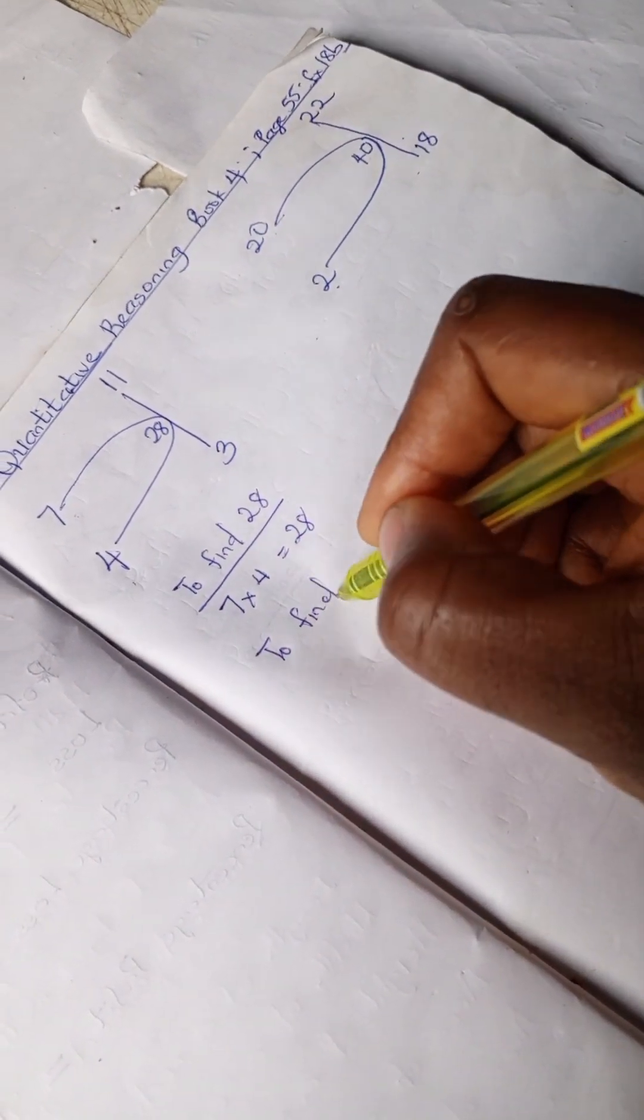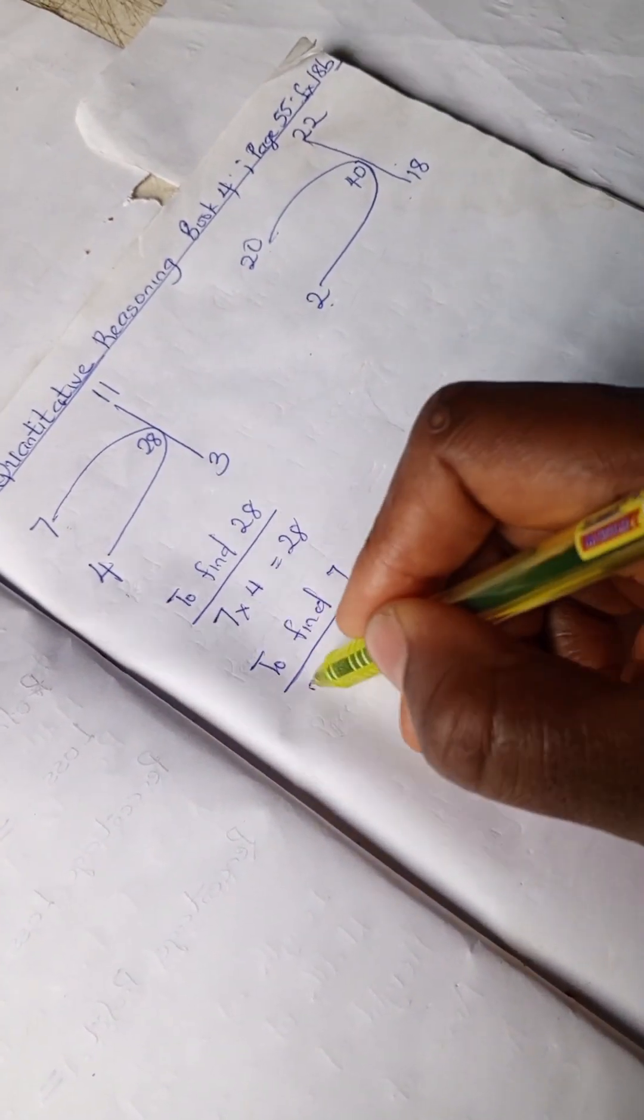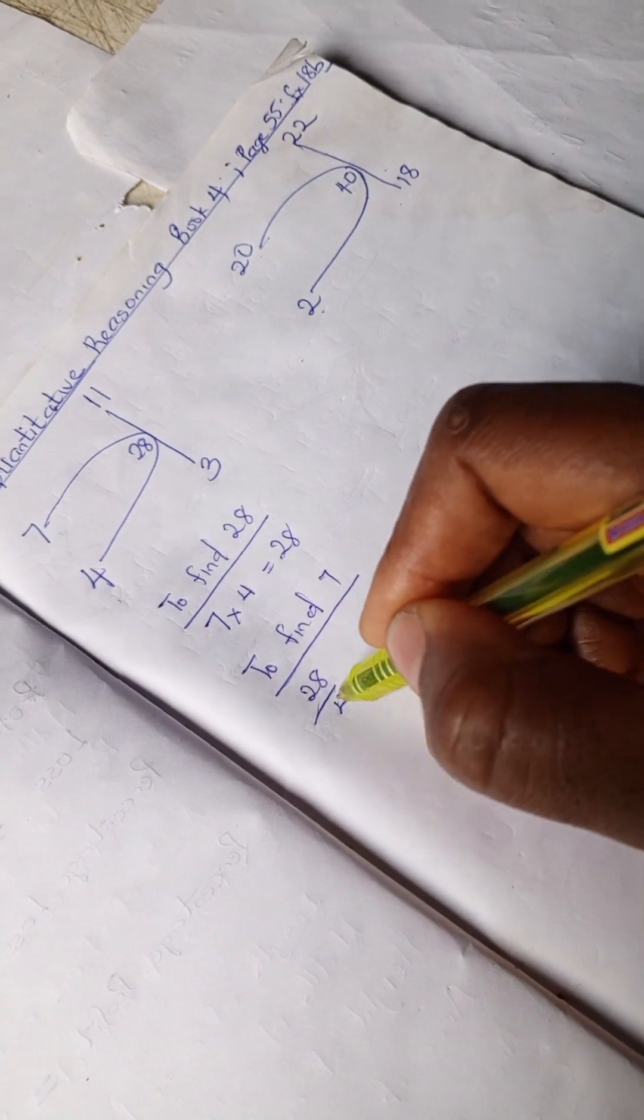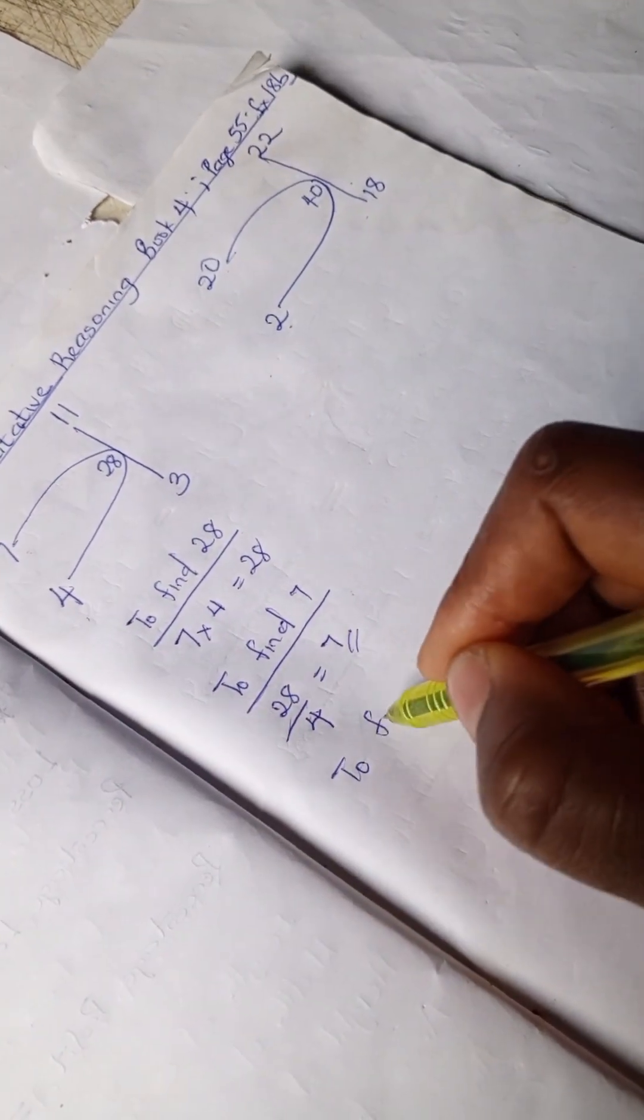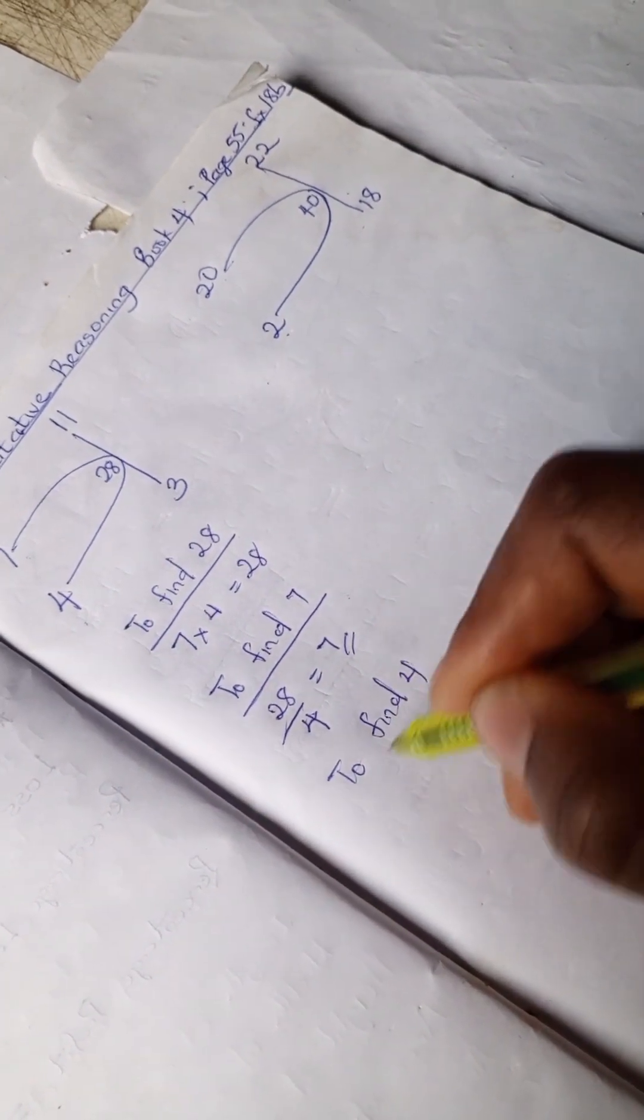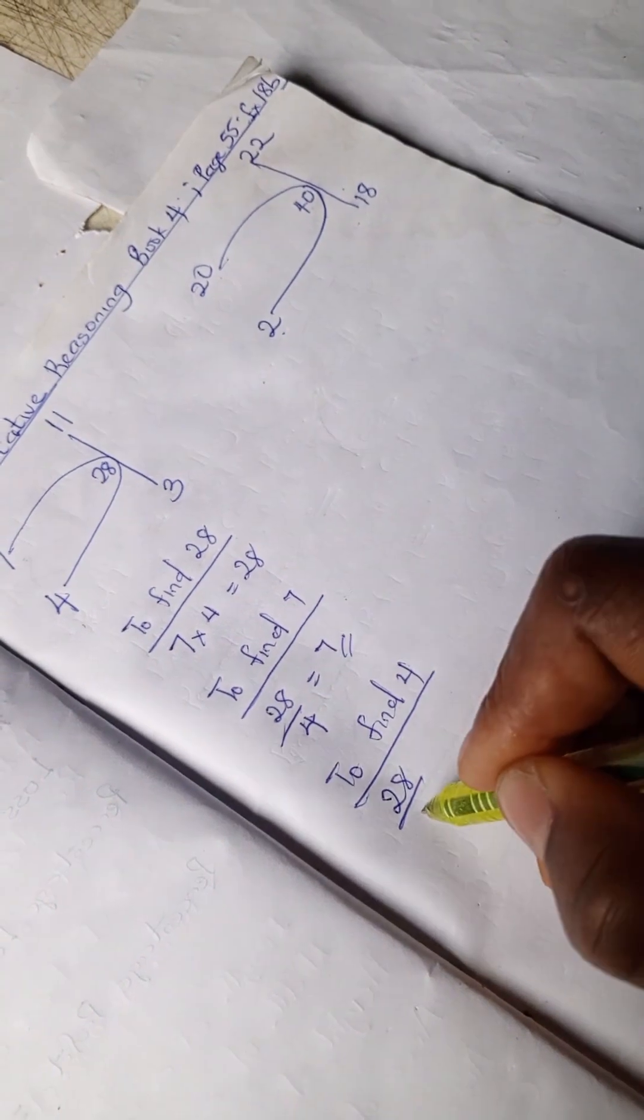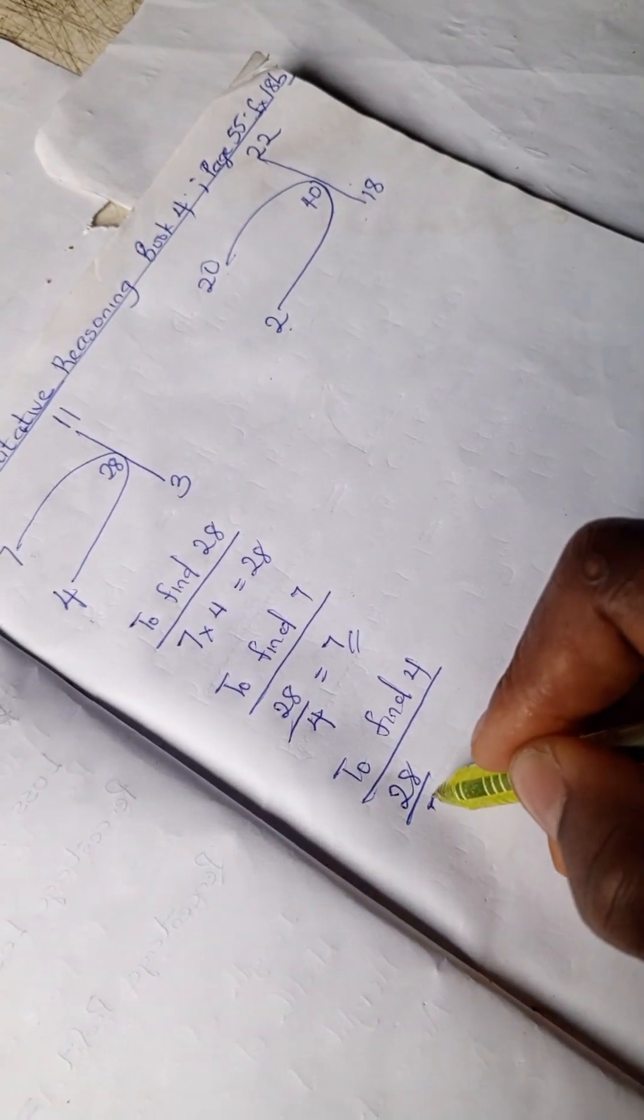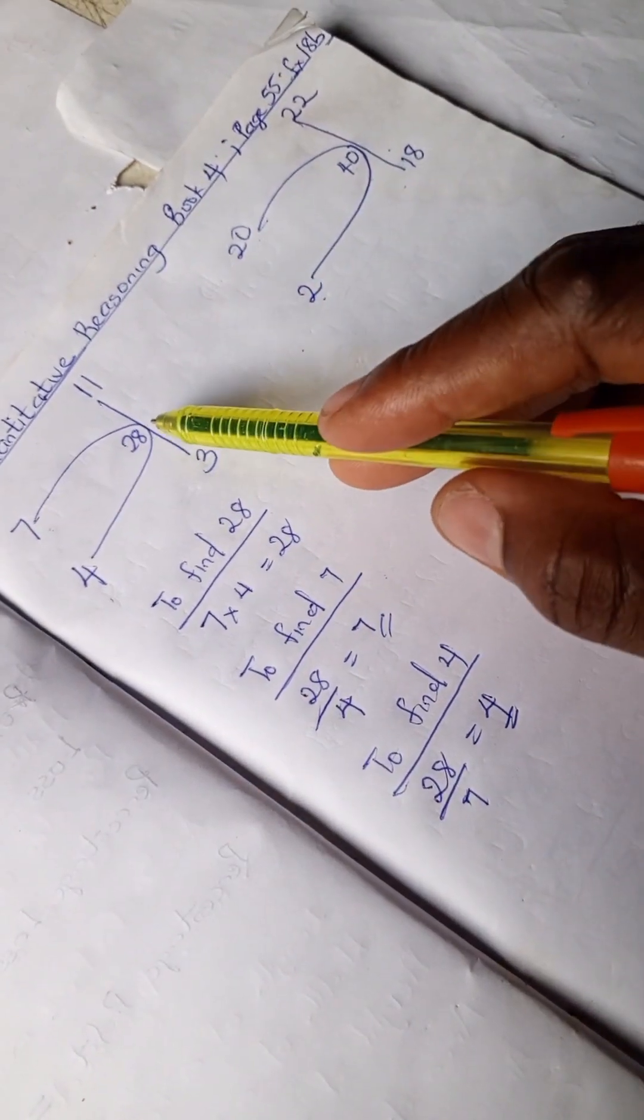7, we have 28 divided by 4 is 7. And to find 4, we can actually use it to find the rest. Divided by 7 we have 4.